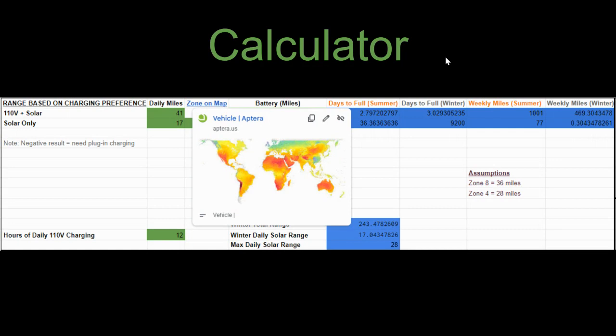I took all of that data and turned it into this calculator for you all. And this is found in the same Google sheet that the calculator trying to determine when you might expect to receive your order can be found in.